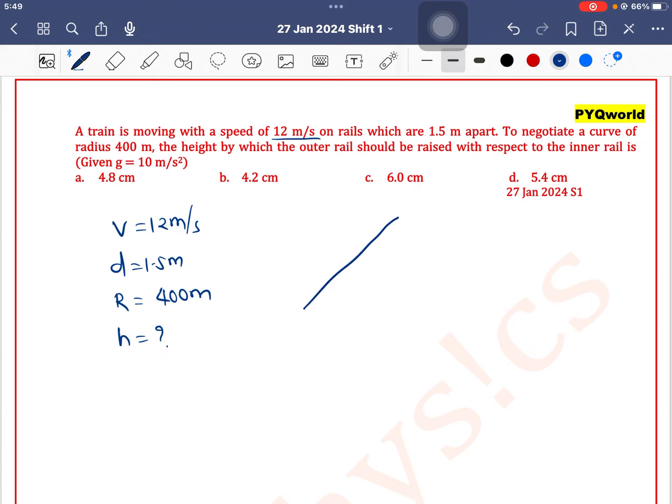Okay, so we have a rail track like this and the distance between these two tracks is d, and the vehicle is moving on this track.